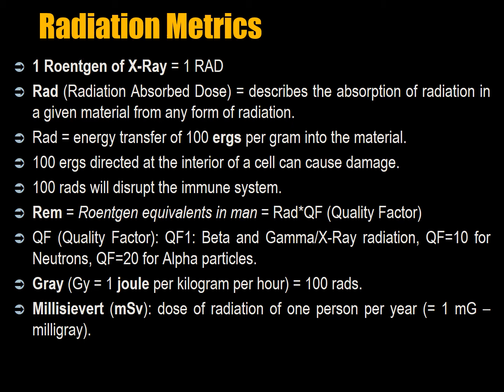A 100-watt light bulb emits 1,000 million ergs per second. A hundred ergs directed at the interior of a cell can cause damage — we're talking genetic damage in the organelles, just outside the nucleus. 100 RADs will disrupt the immune system, and that's actually quite a low threshold.